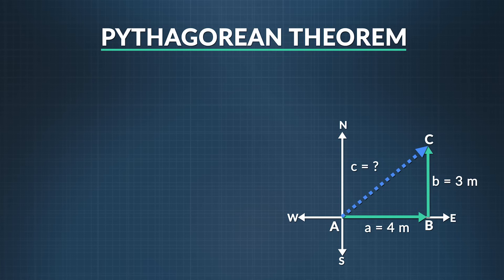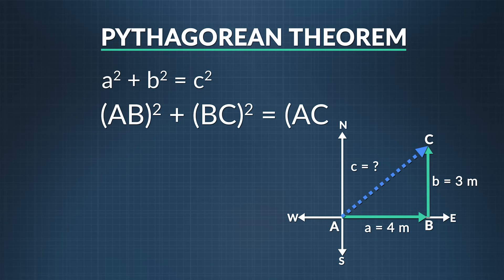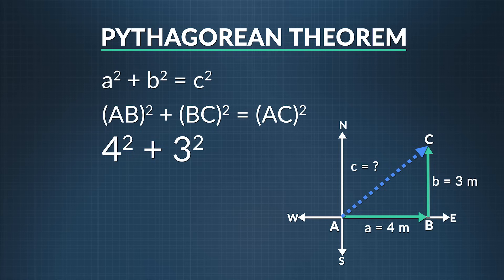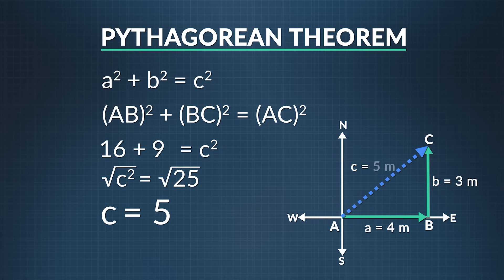The equation, if you remember, is A squared plus B squared equals C squared. A is the distance AB, which is four meters. B is the distance BC, which is three meters. And C is the distance AC, which is our displacement. If we plug everything in, we see that four squared plus three squared is equal to C squared. So, 16 plus nine is equal to C squared. Hence, C squared is equal to 25. If we take the square root on both sides, we find out that C is equal to five meters.